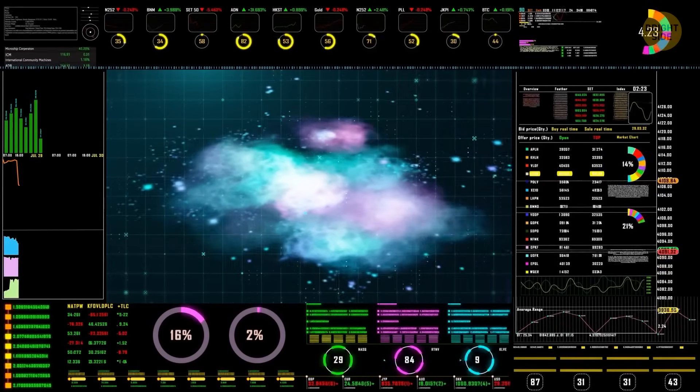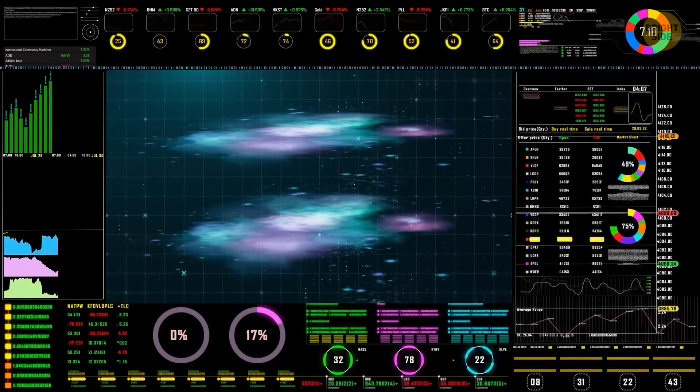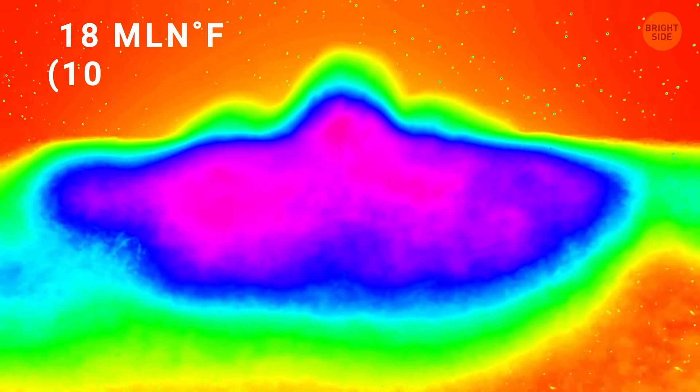But then, recently, scientists have discovered something even more surprising. A second layer of gas! And it's even hotter! How did we discover this gas with a temperature of around 18 million degrees Fahrenheit?